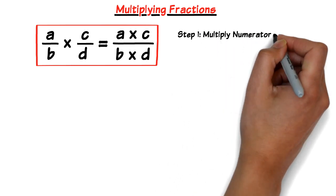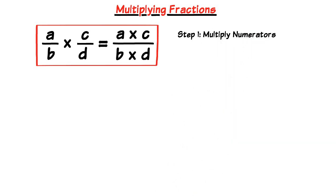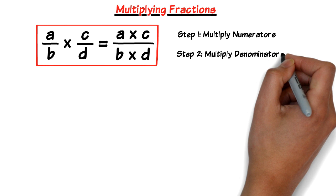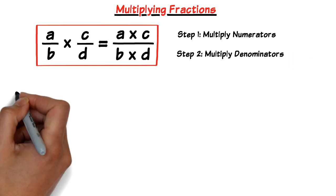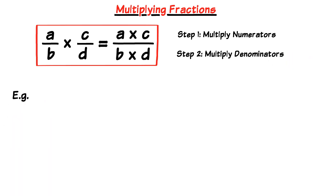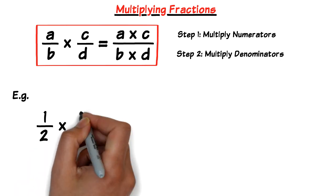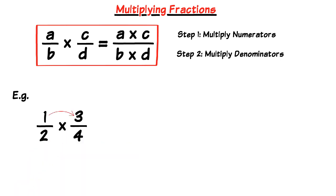Step one: multiply the numerators and that gives us our new numerator. Step two: multiply the two denominators together and that gives us the new denominator. For instance, if we have 1 over 2 multiplied by 3 over 4 — multiplying the numerators we get 1 times 3 which equals 3, then multiplying the denominators we have 2 times 4 which is 8. So the new fraction becomes 3 over 8.